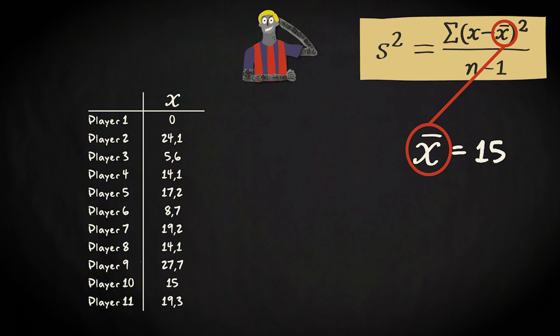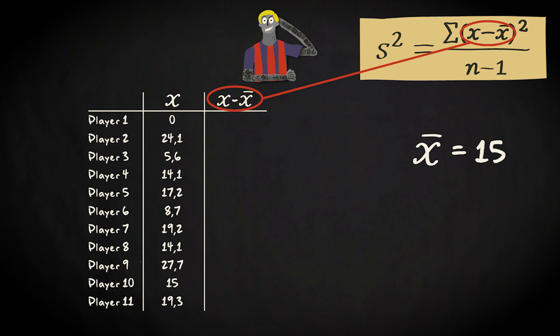The second step is to subtract the mean from every single observation. So let's take the first value, 0. We subtract the mean from this value. That gives 0 minus 15 is minus 15.